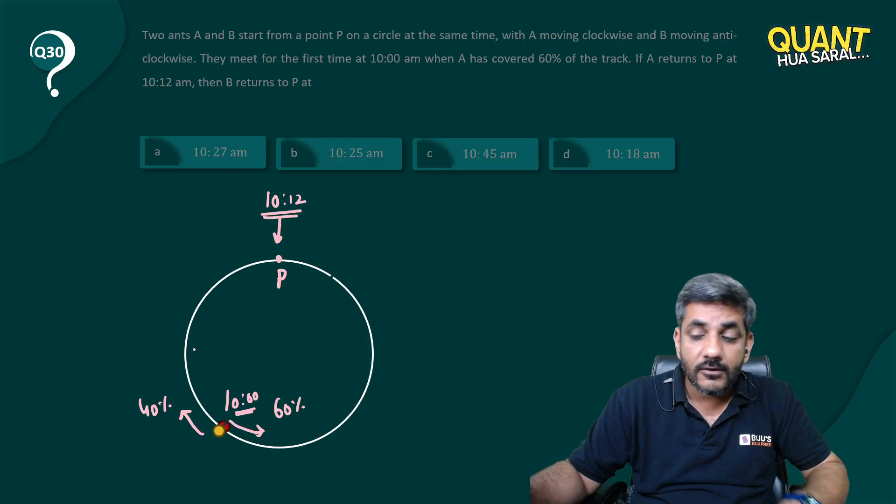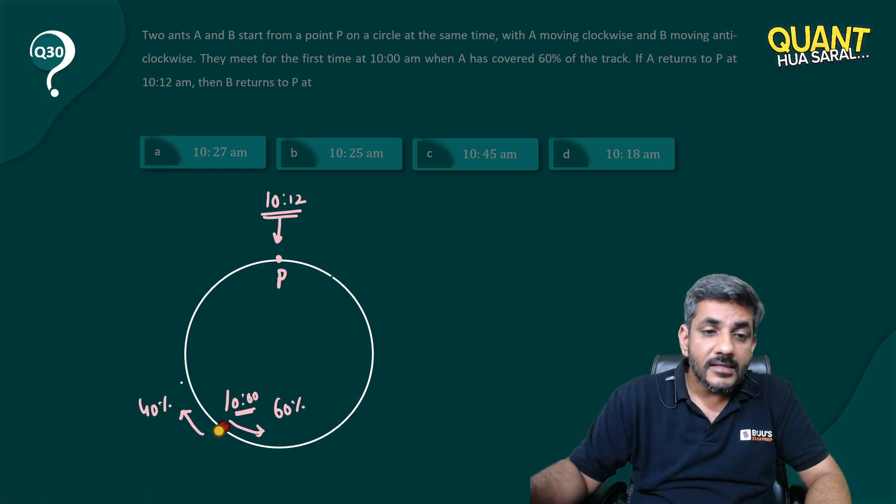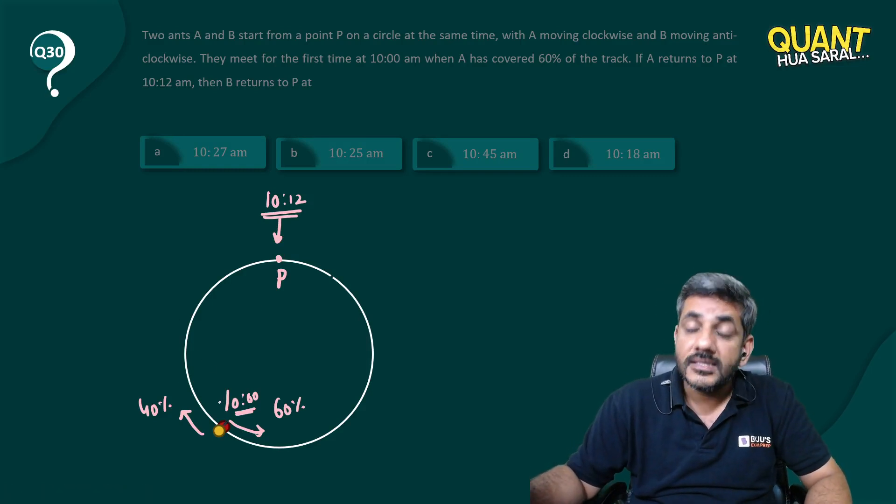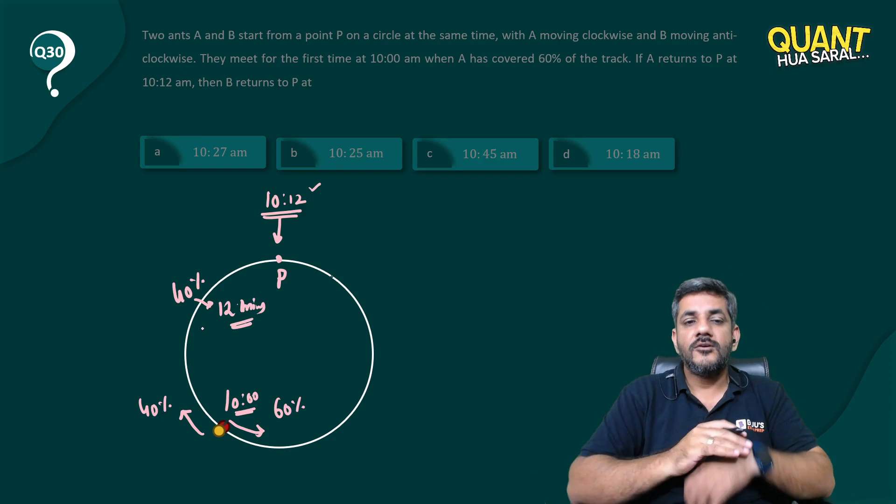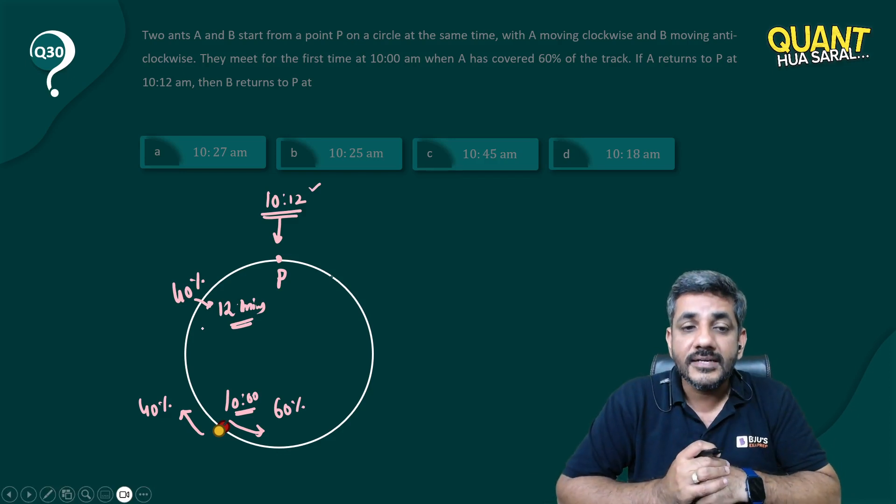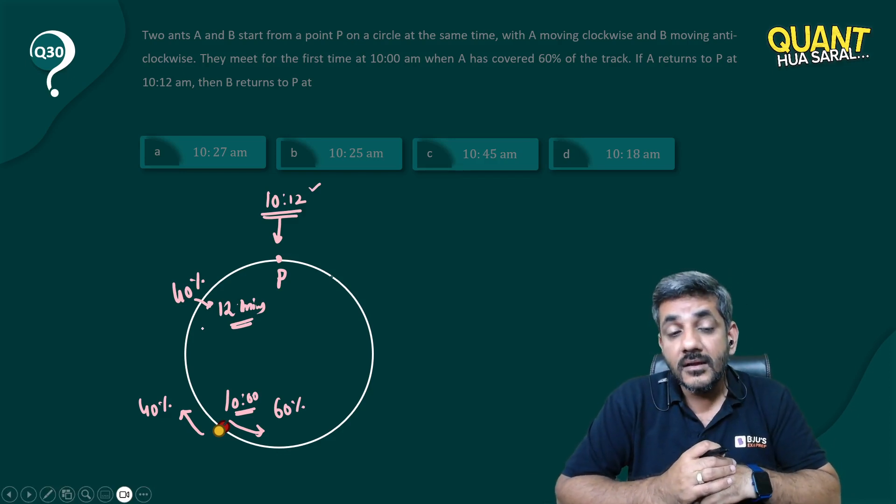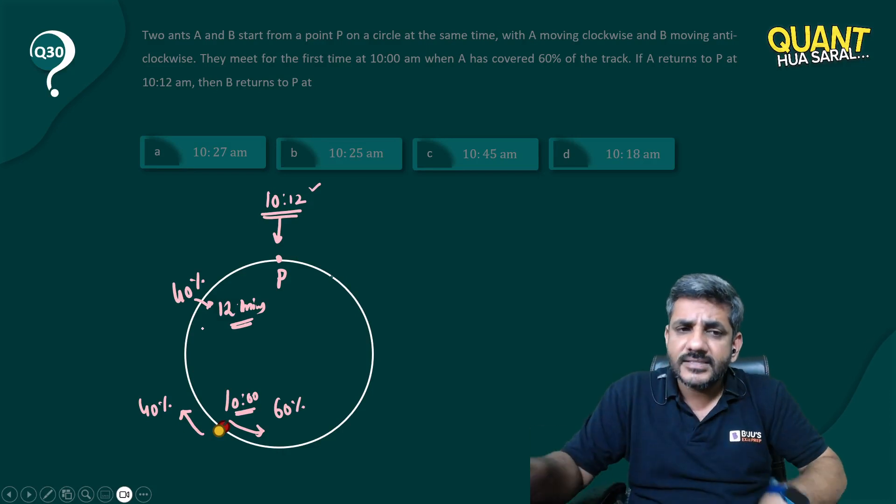From this particular point, I can say that this red ant, that is ant A, has to cover 40% of the distance and it reaches here at 10:12. So to cover this 40%, it takes only 12 minutes. To cover this 40%, it takes only 12 minutes.